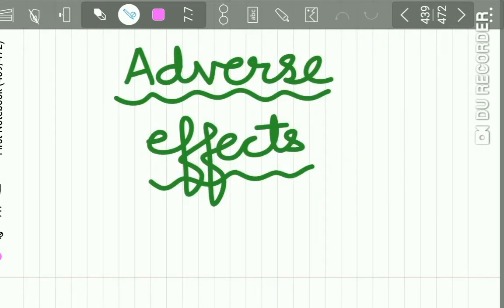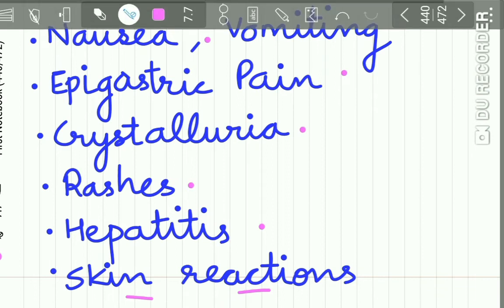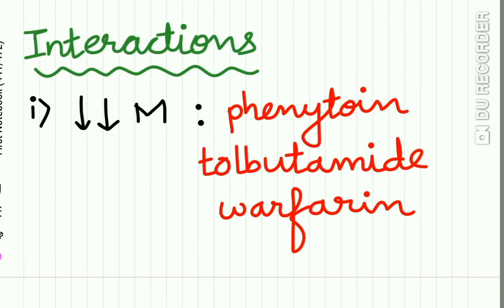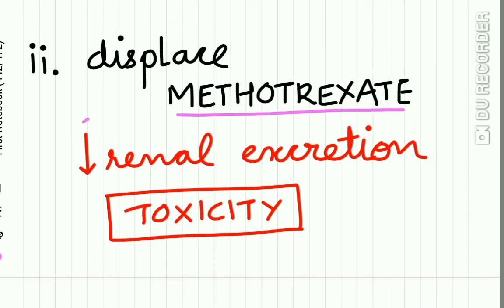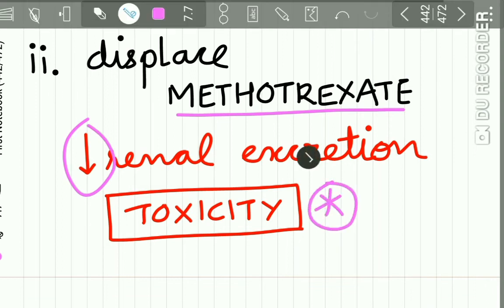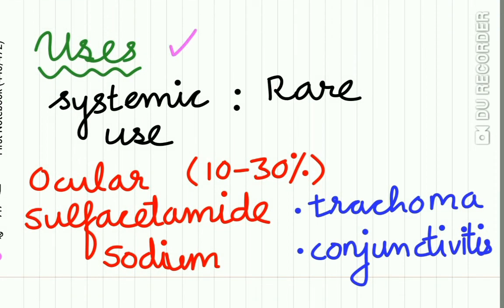The adverse effects of sulfonamides include nausea, vomiting, epigastric pain, crystalluria, rashes, hepatitis, and skin reactions. Regarding drug interactions: sulfonamides reduce the metabolism of phenytoin, tolbutamide, and warfarin. They displace methotrexate and reduce its renal excretion, resulting in toxicity.